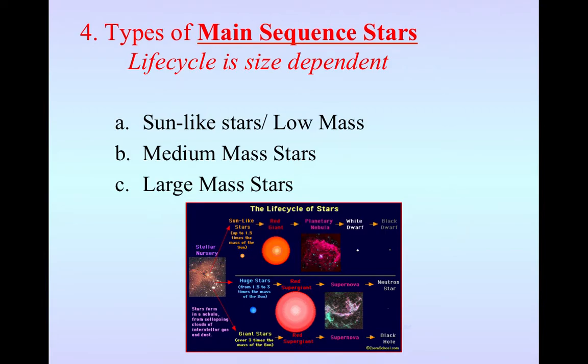So there's different types of main sequence stars. So number four, types of main sequence stars. And what we're going to look at now is how the life cycle of the star is dependent on the size of the star. So the amount of mass within my main sequence star determines what's going to happen as it moves through its life cycle. And there's three kinds. And you don't have to write this part down yet because we're going to look at each one individually.